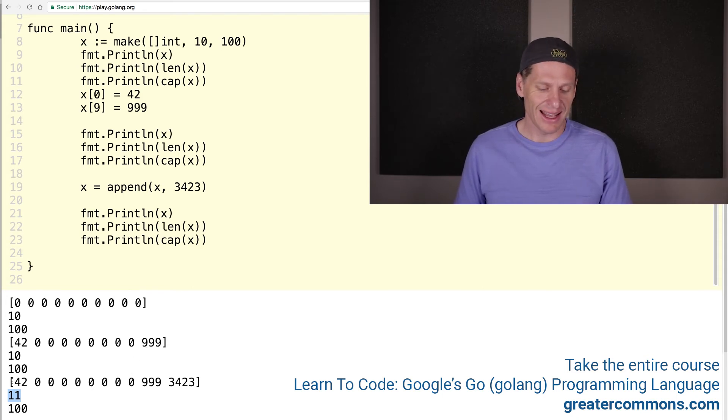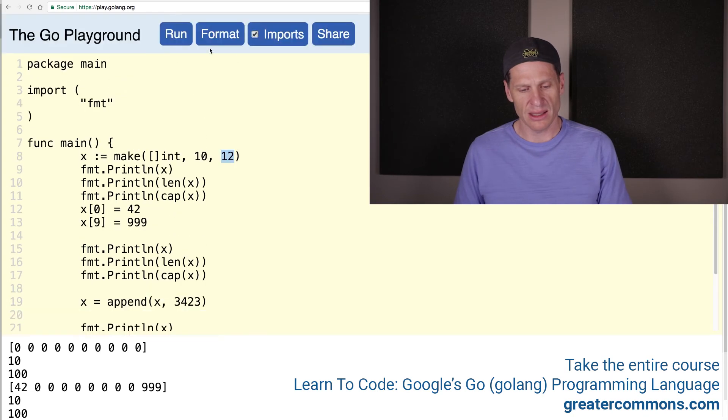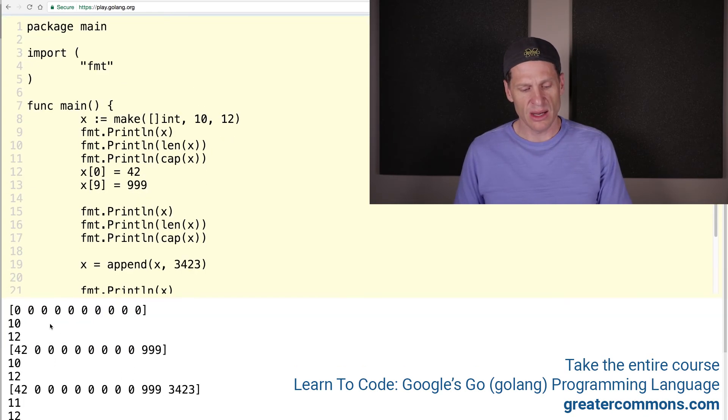Well, what if we started out with this being a slice of 12? This is the length. And this is the underlying array. And the capacity is 12. Let's take a look at this. Let's run that. And so here we have, this is our slice. And it's length 10. And the underlying array is 12. And now we've added some values. Length 10, underlying array is 12. And now we've added more values. And we had to do that with append. Because originally we didn't have a length past 10. So we appended and added that in. Now we're length 11.